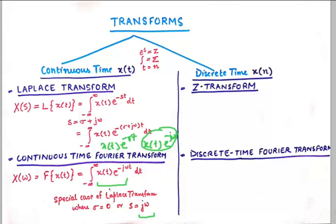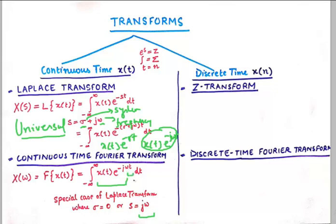This is very important for deriving the relationship between Laplace and Fourier transforms. Laplace transform is a universal transform that takes into account two factors: σ, which is representative of the system, and Ω, which is representative of frequency. If you wish to find the stability of the system and also analyze its frequency response, Laplace transform is the solution. If you are just concerned about the frequency response, a simpler version — the Fourier transform — can be used, focusing only on Ω. So Fourier transform is a special case of Laplace transform.